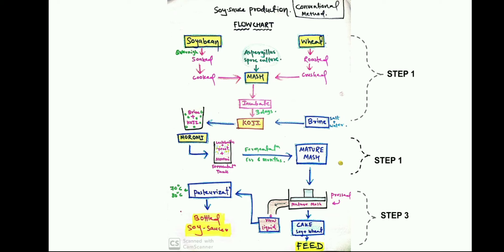Now it's time for the actual production of soy sauce. Let's first look at the conventional method using the flow chart. Step one: soybeans are soaked and cooked. At the same time, in a separate container, wheat is roasted and then crushed. The cooked soybeans and crushed wheat are mixed and blended together to form a mash. Aspergillus spore culture is then added to the mash and allowed to mature for three days in large perforated vats, through which air is circulated. Air circulation is essential in this step.